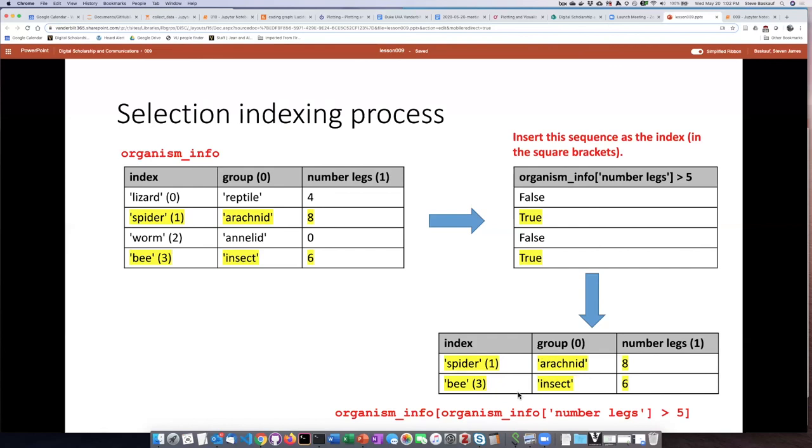So the way this is implemented, we can simply use the kind of bracket notation that we had here. But instead of indicating a slice of the data, we can indicate the condition for the data that we want to use to select. And so this expression, organism_info number_of_legs is greater than five, the one that we use to generate this Boolean series is the thing that we put into the square brackets. And that is what will end up generating the output that we see here.